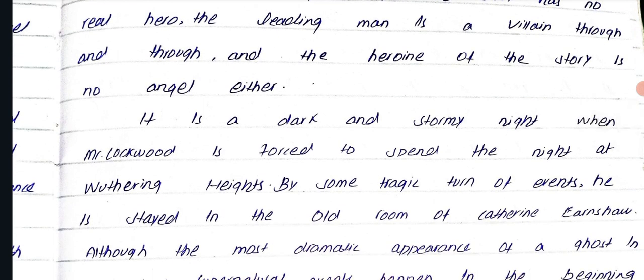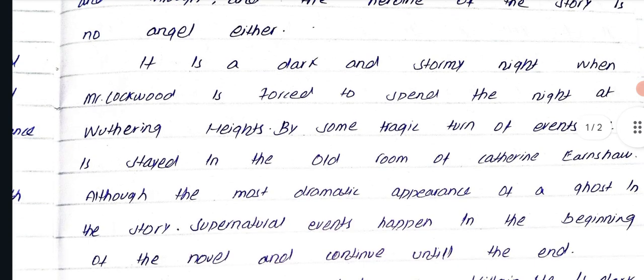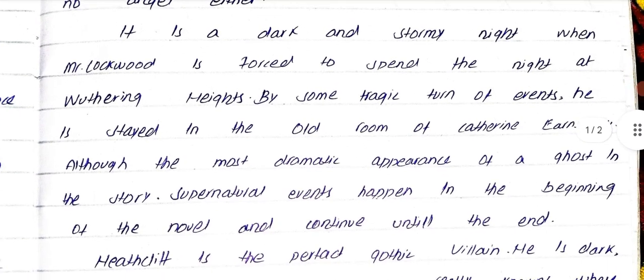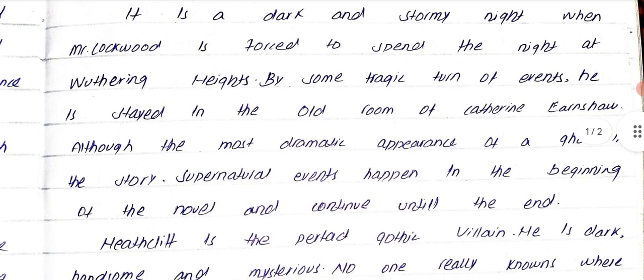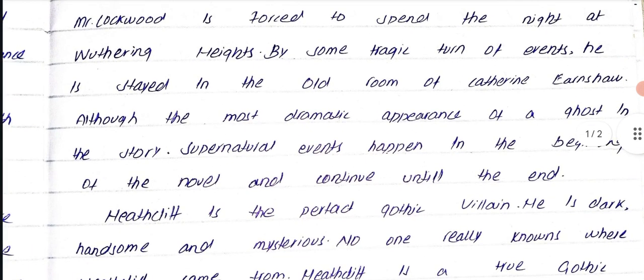It is a dark and stormy night when Mr. Lockwood is forced to spend the night at Wuthering Heights. By some tragic turn of events, he is led to the old room of Catherine Earnshaw. Although the most dramatic appearance of a ghost in the story, supernatural events happen in the beginning of the novel and continue until the end.